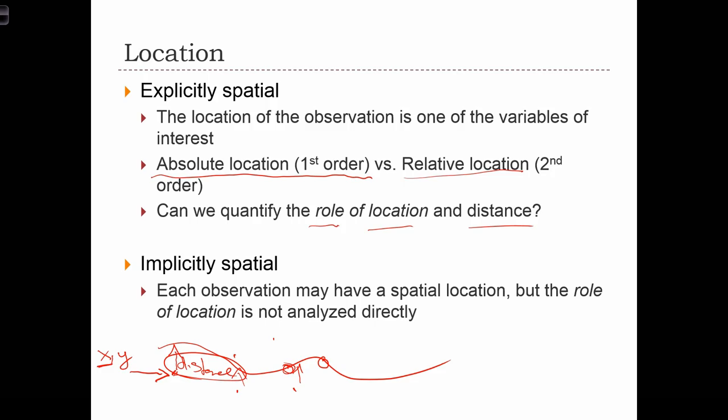All data that we collect are at least implicitly spatial. Nothing is really aspatial anymore — everything we collect has some kind of location associated with it. But with implicitly spatial data, each observation may have a spatial location, but we're not actually analyzing the role of location itself, and therefore we often don't need to collect or have data about location in our data set.